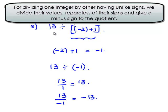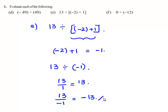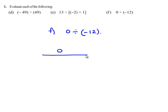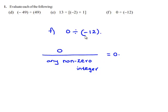Therefore, 13 divided by negative 2 plus 1, within the brackets, is equal to negative 13. We will see the next problem: 0 divided by negative 12. We know that 0 divided by any non-zero integer gives 0. Therefore, 0 divided by negative 12 is equal to 0.